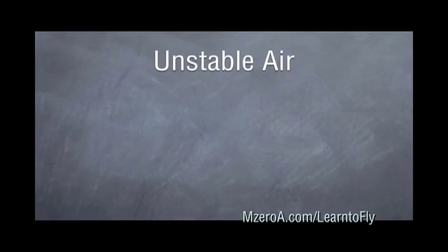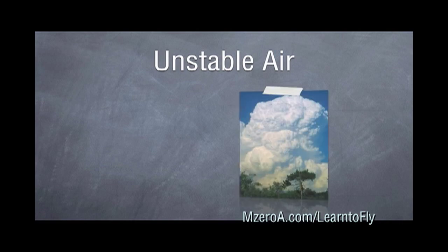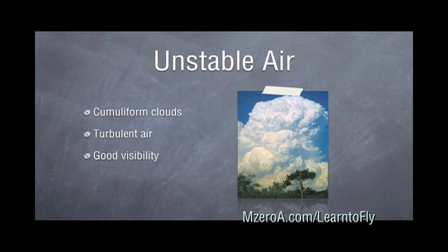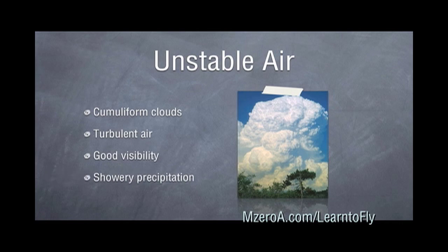On the other hand, we have unstable air, which usually means cumuliform clouds along with turbulent air, good visibility, and usually showery precipitation.